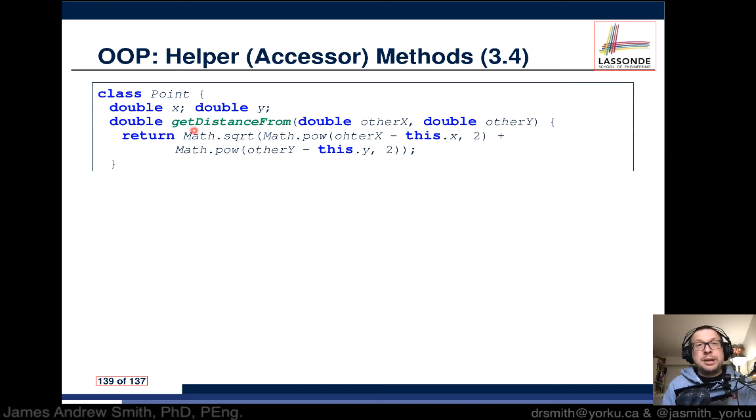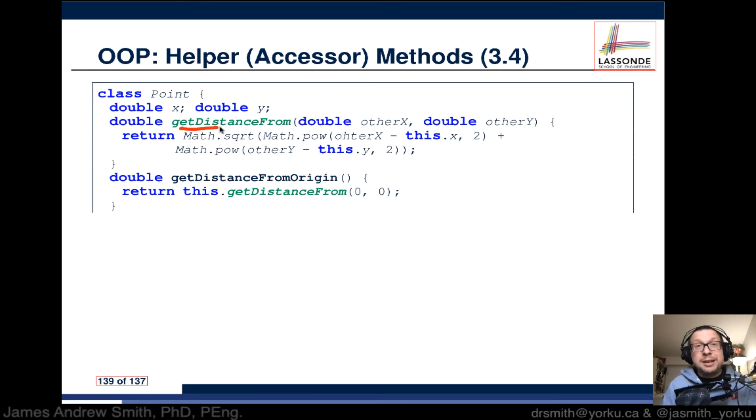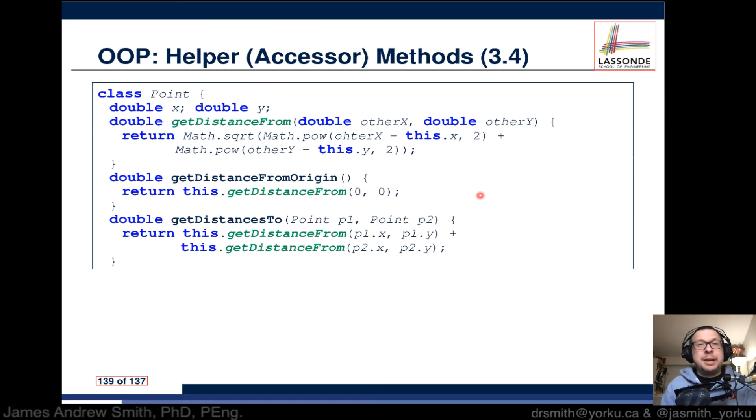So we get get distance from other x, other y, we return this. Get distance from origin, we call get distance from like that. That simplifies what this looks like. Now you do it once, not a big deal, but you do the second time, and so this method is also simplified. We've got this simplified method, that simplified method.